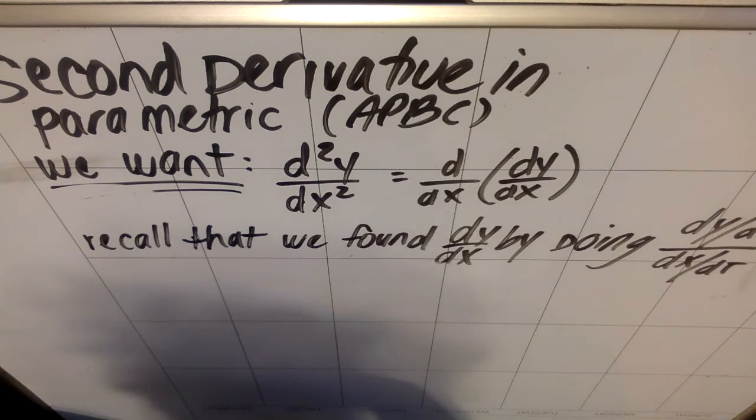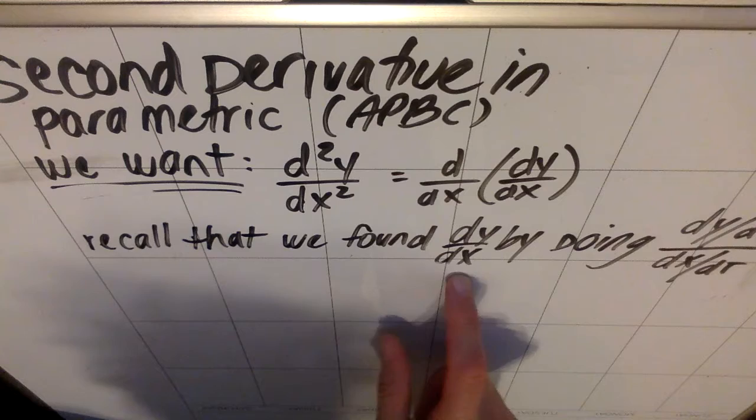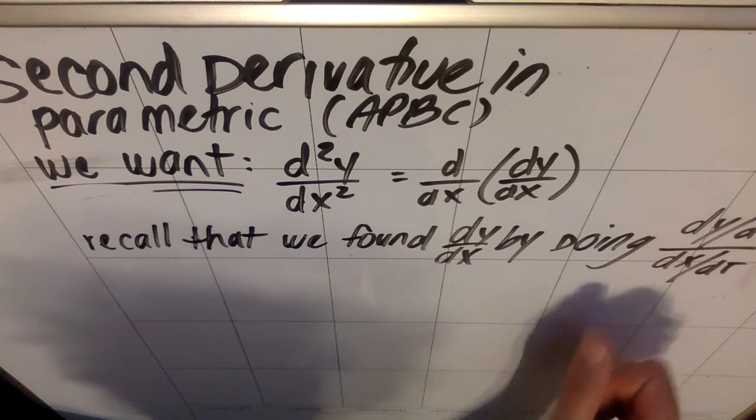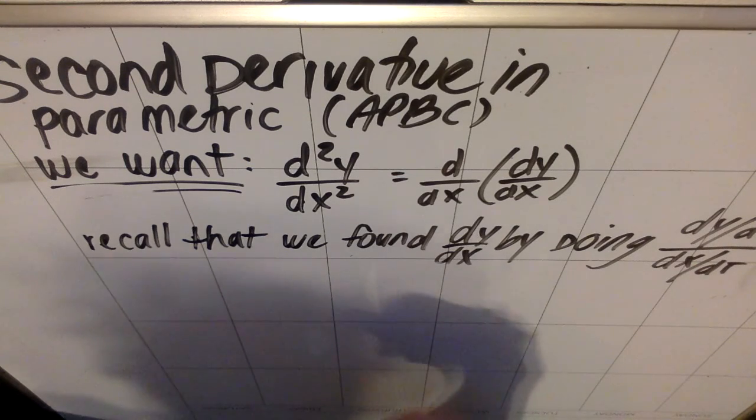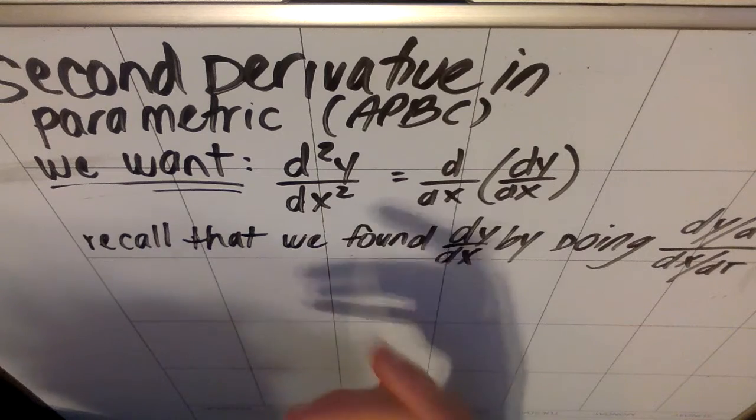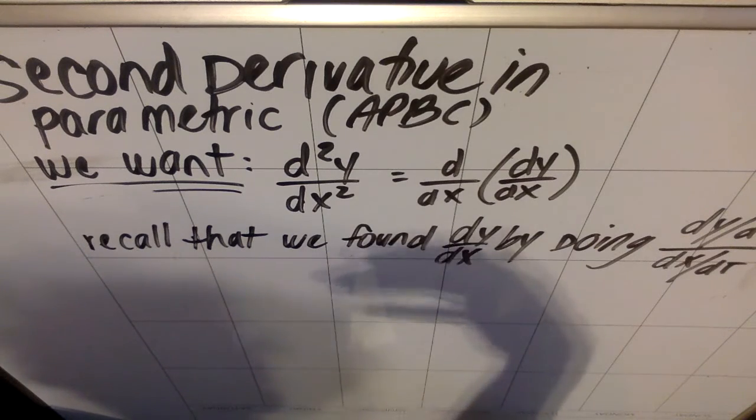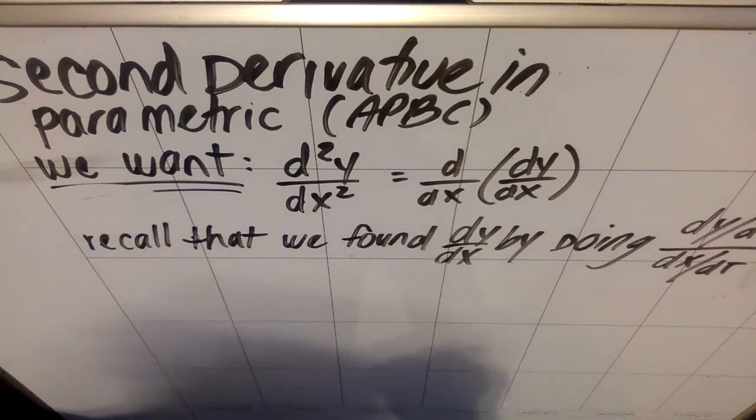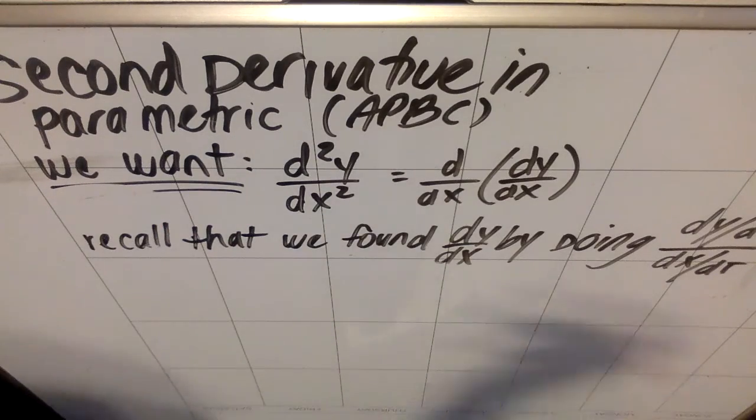We're going to do that using the dy dx that we've already found, using dy dt over dx dt. So I want to walk you through why the formula is what it is, and then we'll write it down. And it is kind of worth memorizing. It's one of those formulae—finding d squared y dx squared in parametric is something you just want to memorize for your AP. But it makes more sense if we walk through why it is what it is.